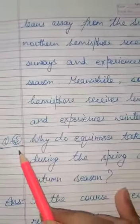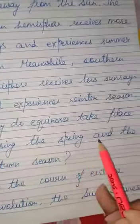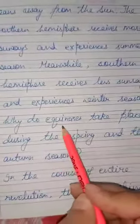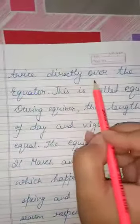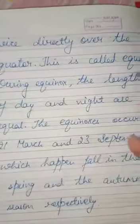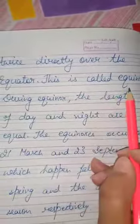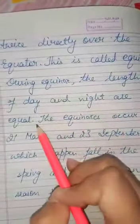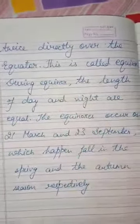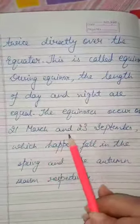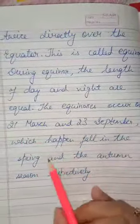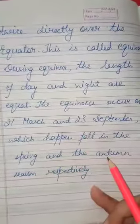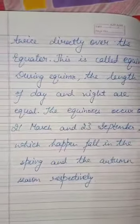Question five: Why do equinoxes take place during the spring and autumn seasons? Answer: During the entire period of revolution, the Sun shines directly over the equator twice a year. These two days are known as equinoxes. During an equinox, the length of day and night are equal. The equinoxes occur on 21st March and 23rd September, which fall in the spring and the autumn seasons respectively.